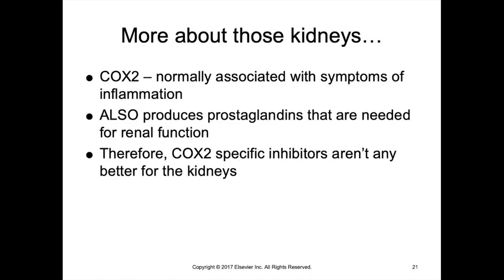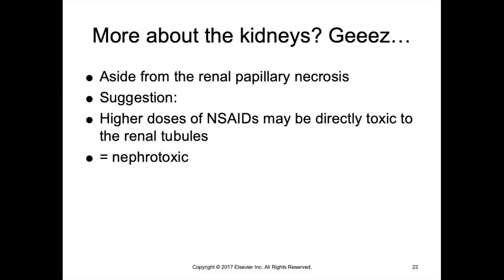Interestingly, COX-2 also produces prostaglandins in the kidney needed for normal renal function. Therefore, COX-2 selective inhibition NSAIDs are not significantly safer for prevention of renal problems than older non-selective NSAIDs. COX-2 selective inhibitors are generally a bit better for gastrointestinal function and have some renal benefits, but not in this specific case.